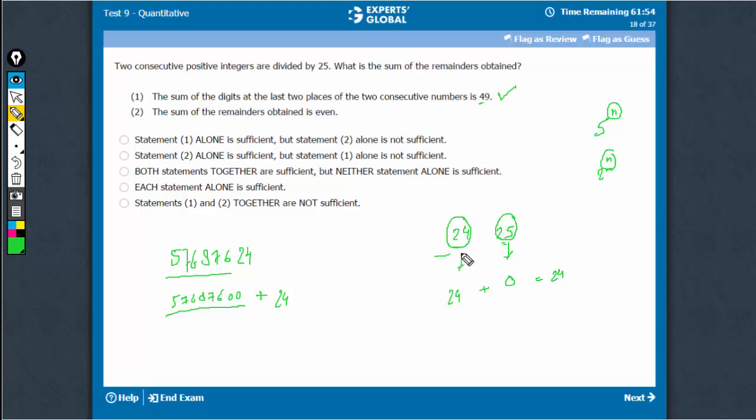So for example, in this case, the remainder here is 24. This is remainder 25, but practically it's not 25. 25 when divided by 25 will again give you a remainder 0.